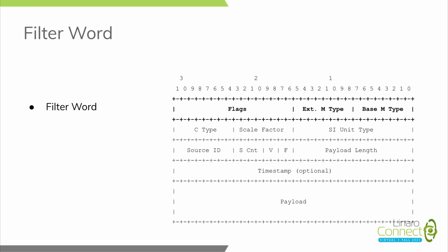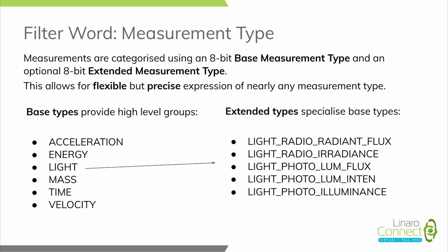The filter word is one of the most important, as it determines which processor nodes can deal with your specific measurement. It consists of three parts: an 8-bit base measurement type, an 8-bit extended measurement type, and then 16 bits of flags. Measurements are classified based on two 8-bit values — every measurement has a high-level base measurement type covering things like acceleration, energy, light, mass, time, velocity, magnetic field, and so on, giving a very generic group with a specific default SI unit and type.